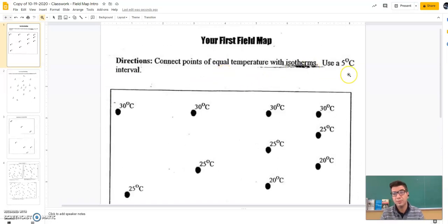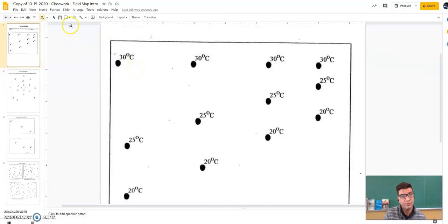You'll notice it says here, connect points of equal temperature with isotherms. Remember, iso means equal, therms means temperature. So, points of equal temperature. Use a five degree interval. I'm going to use my scribble tool. I'm going to go up here to select line, go down to scribble, and I'll actually draw across these.